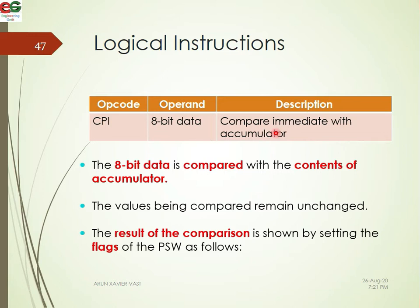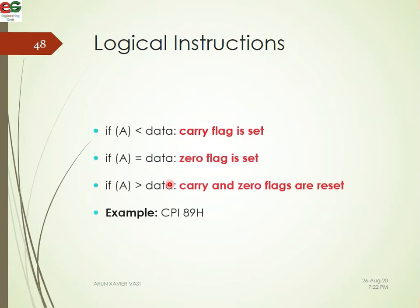In CPI, the immediate data is compared with the content of the accumulator. If the accumulator value is less than the data, the carry flag is set. If accumulator equals data, the zero flag is set. If the accumulator is larger than data, both the carry flag and zero flag are reset. This is how we determine which value is larger or smaller.